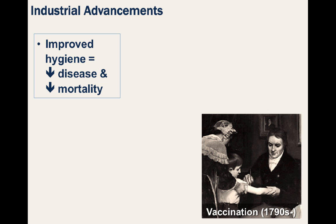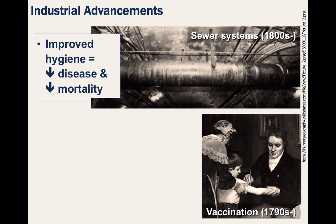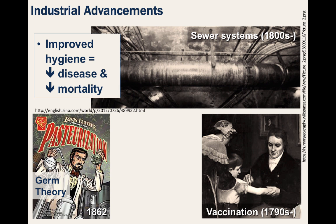The first vaccine for smallpox became available in the 1790s. Sewer systems were improved considerably, and by the 1860s, Louis Pasteur discovered that boiling liquids made them much safer and prevented the spread of disease. This process of pasteurization helped bring about germ theory — the thought that tiny microorganisms are what get you sick — a revolutionary realization that would lead to many other discoveries.